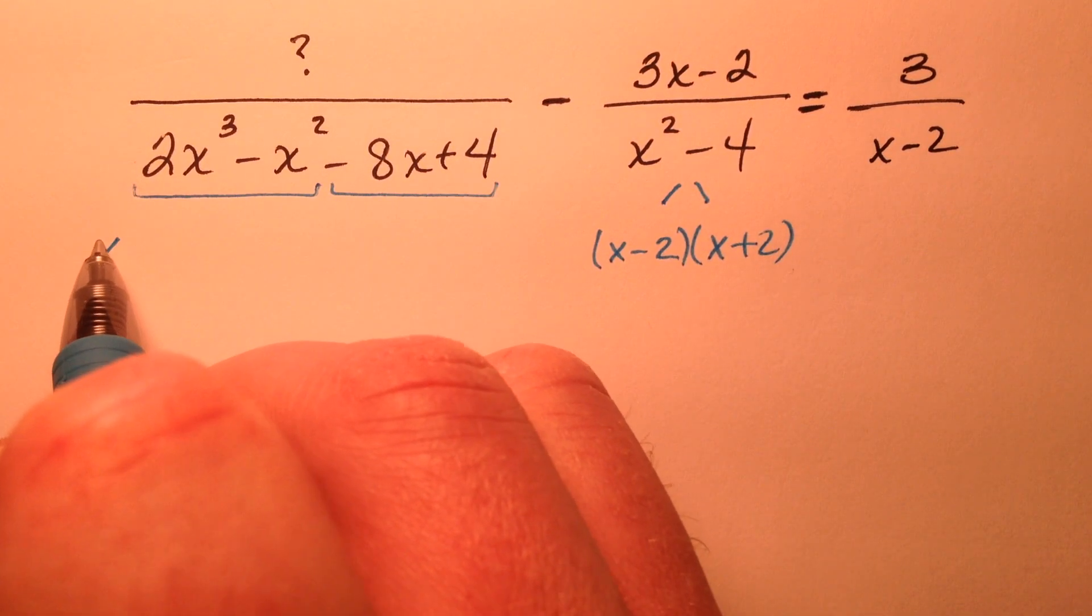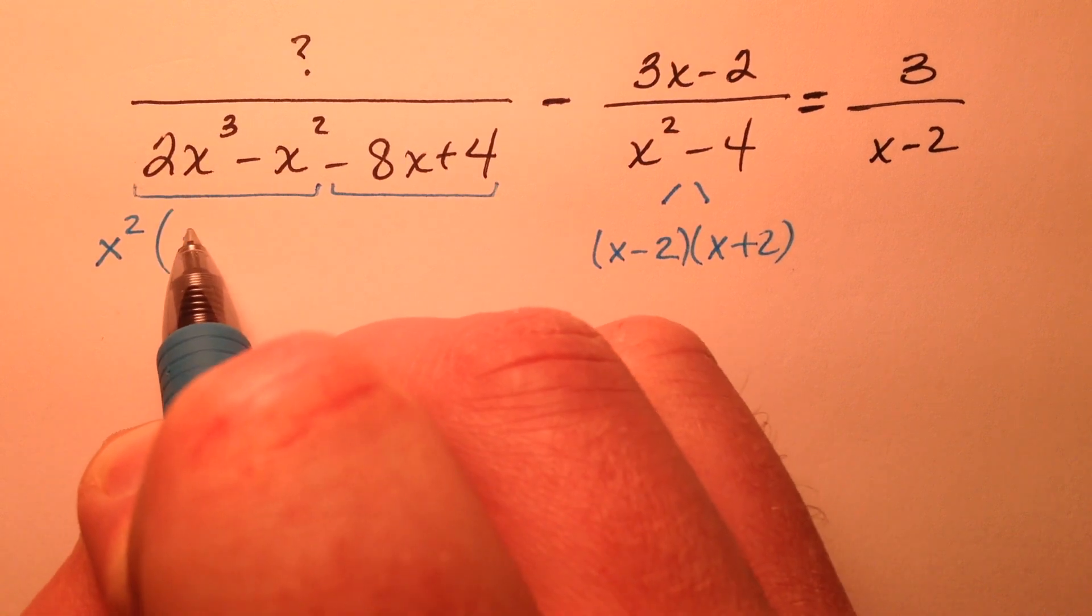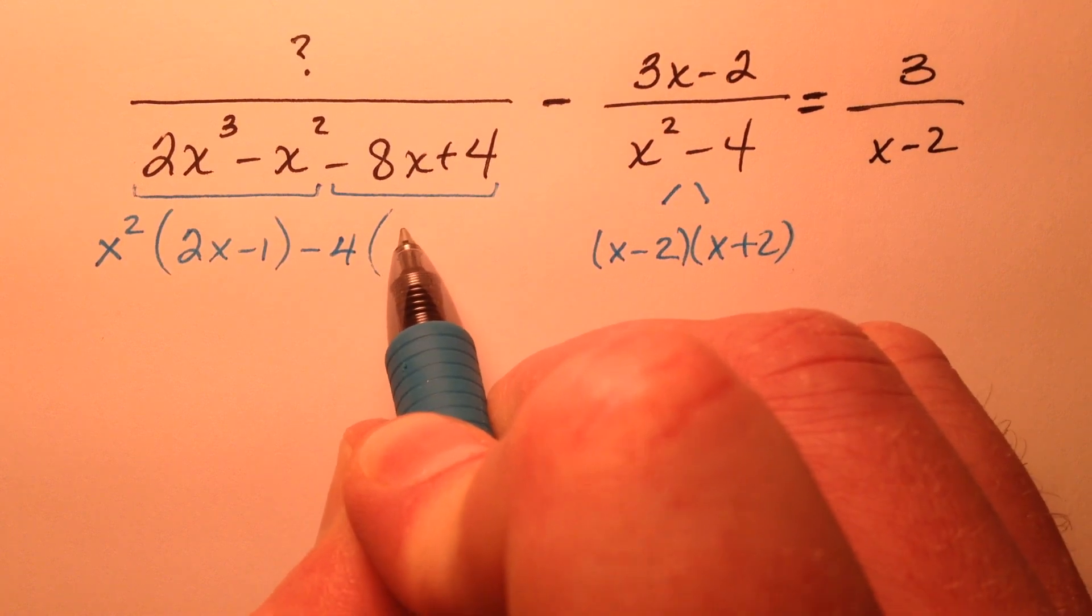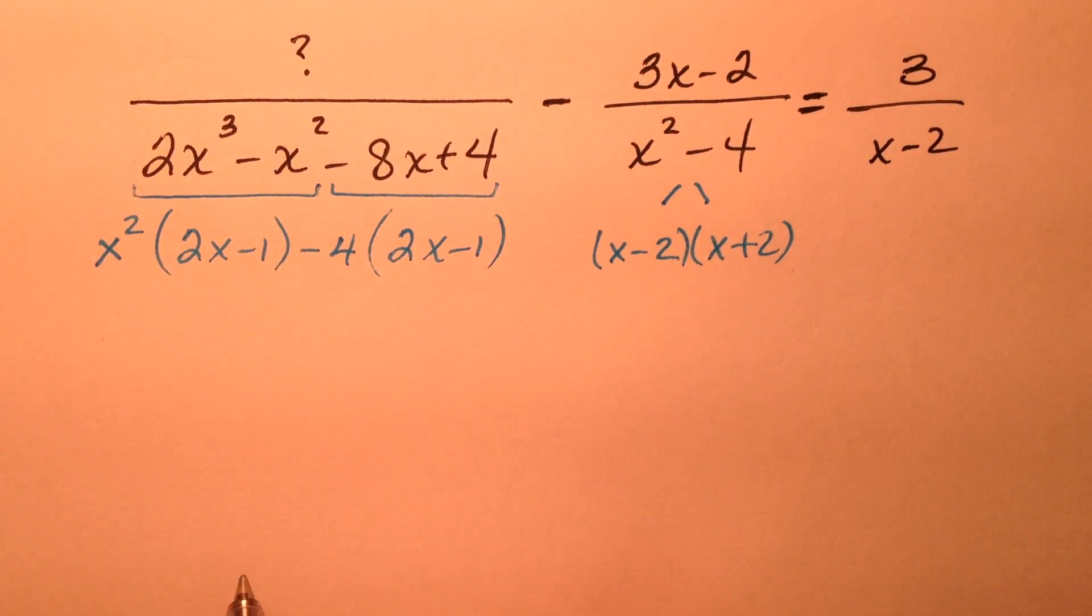Over on this one, I'm going to factor out first an x squared, and I'm going to have 2x minus 1, and then I'm going to factor out a minus 4, and then it looks like I'll have a 2x minus 1.